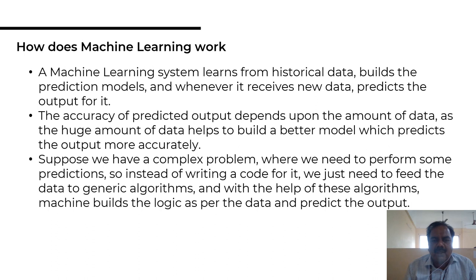A machine learning system learns from historical data and builds prediction models. When it receives new data, it predicts the output. The accuracy of the predicted output depends upon the amount of data — a larger amount of data gives a better model which predicts the output more accurately.